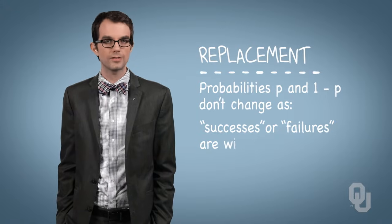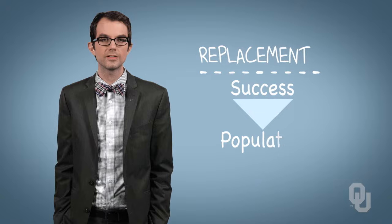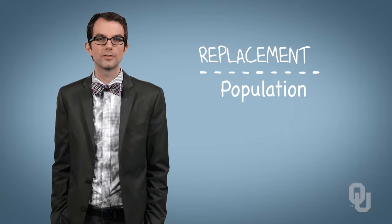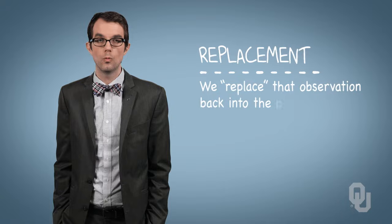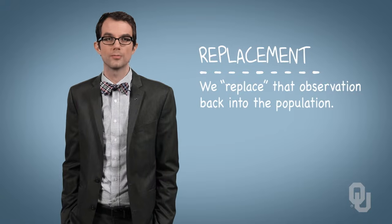That is, if we see a success, we theoretically put that success back into the population so that our likelihood of successes don't change. We replace that observation back into the population.